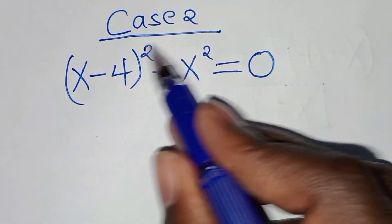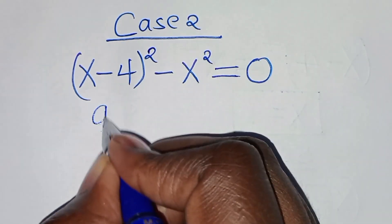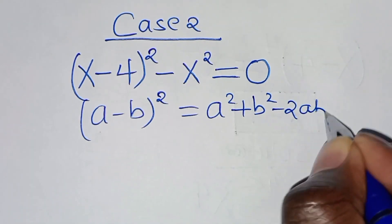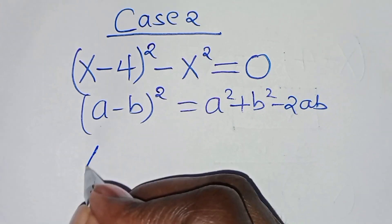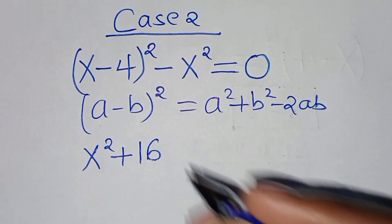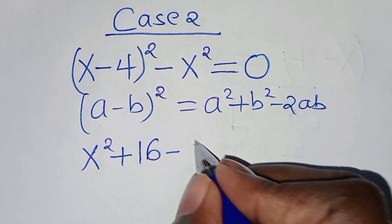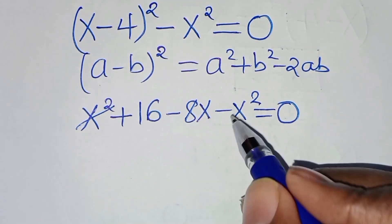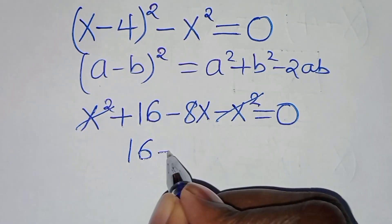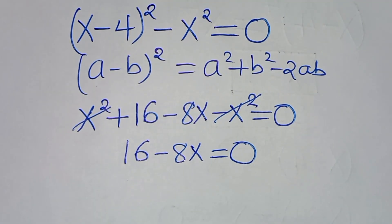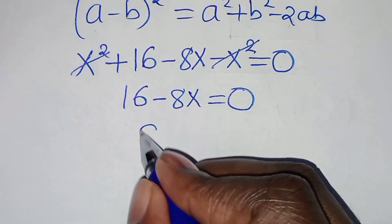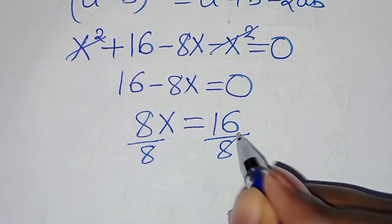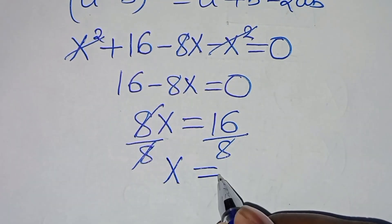Now in case 2, we have x minus 4 squared, minus x squared, this is equal to 0. This is in the form of a minus b raised to power 2, which is a squared plus b squared minus 2ab. Applying this algebraic identity, we get x squared plus 16, then minus 8x, then subtract x squared, this is equal to 0. So x squared minus x squared cancels, leaving 16 minus 8x equals 0. This implies 8x equals 16. Dividing both sides by 8, we have that x is equal to 2.